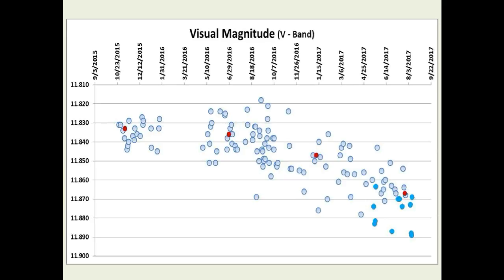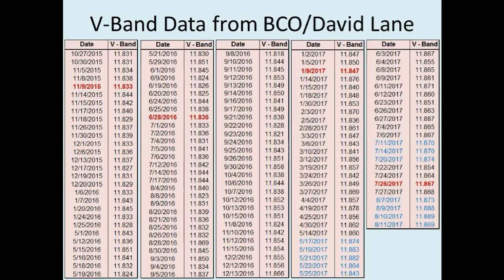It should be noted that our previous version of the accelerating long-term dimming curve did not quite fit the older measurements of this data set — the calculated curve was too linear and hence was at a higher flux level than the older measurement data. So we had to add an additional acceleration term to the equation to account for this.